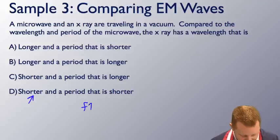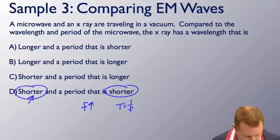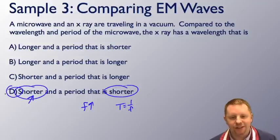Well, if frequency is higher, period is one over frequency. So the period must be smaller. It's an inverse. So we've got shorter and shorter. Correct answer, d.